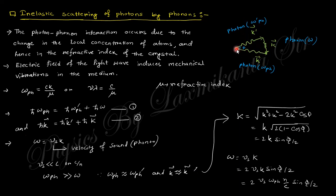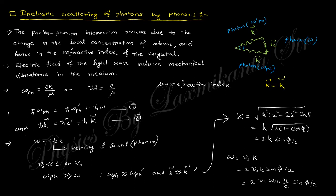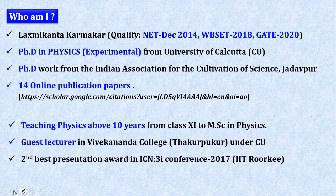Since k is nearly equal to k-prime, the phonon wave vector capital K equals small k minus small k-prime. Using the addition formula, you can derive expressions for omega and K of the phonon — the frequency and wave number. These expressions allow you to calculate the phonon dispersion from scattering geometry. This covers the concept of phonons and their interaction with photons. In the upcoming session, we will discuss the specific heat and related topics — stay connected.